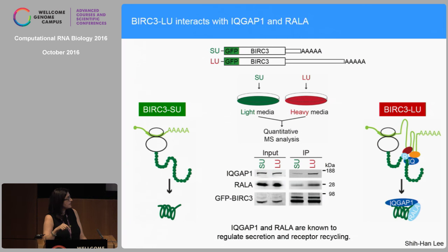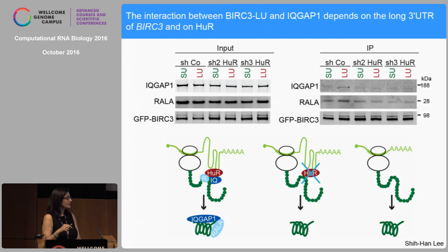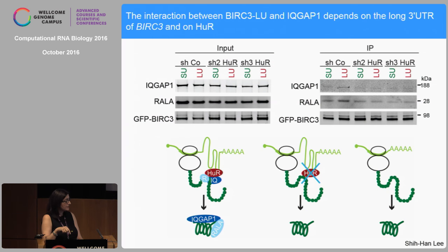To understand how BRK-LU regulates recycling of CXCR4, we did the same experiment as for CD47 — quantitative mass spec on GFP-BRK constructs with short or long 3' UTR. We got hundreds of candidates that bind much better to BRK in the presence of the long 3' UTR. Peggy selected two known candidates already known to regulate CXCR4 recycling: IQGAP and RAL-A. BRK-LU interacts better with IQGAP and RAL-A than BRK made from the short 3' UTR. And again, the key RNA-binding protein is HuR — if we knock down HuR, the interaction goes back to background levels in both cases, showing you need the long 3' UTR and HuR for IQGAP and RAL-A to interact with BRK.